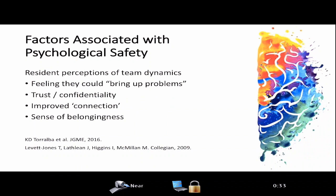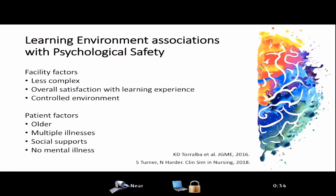Other factors associated with higher psychological safety include residents feeling they could bring up problems — not just related to patient safety — as well as trust and a feeling of confidentiality within the team, and improved connection. Connection can also improve trainee empowerment and the ability to acknowledge uncertainty. Sense of belongingness is really important and overlaps with the inclusion avenue — it's associated with feeling safe, comfortable, satisfied, and happy within the learning environment, and relates to self-esteem, resilience, connectedness, confidence, degree of self-efficacy, and willingness to question poor practice.